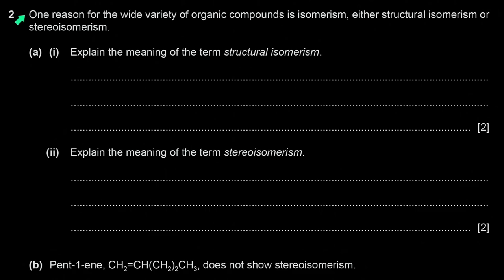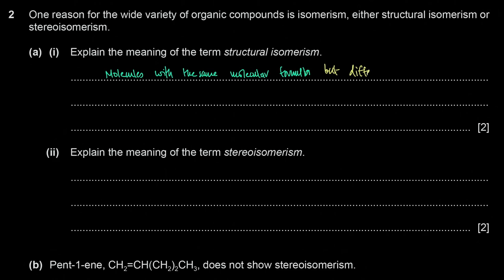Question 2: one reason for the wide variety of organic compounds is isomerism — structural or stereoisomerism. Structural isomers are molecules with the same molecular formula but different structural formulae, meaning they have different structures or different arrangements of atoms in their connectivity.